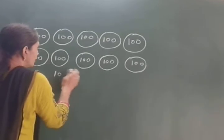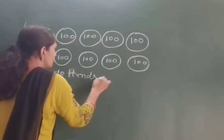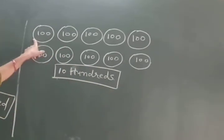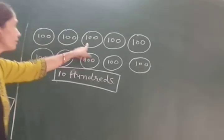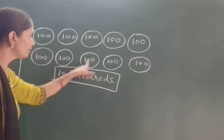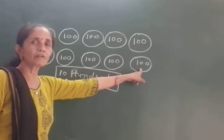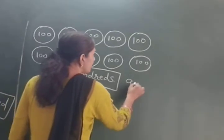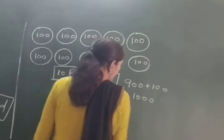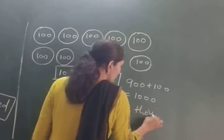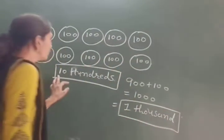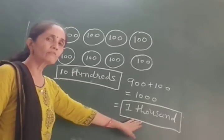This is ten hundreds. One hundred plus one hundred: one hundred, two hundred, three hundred, four hundred, five hundred, six hundred, seven hundred, eight hundred, nine hundred - which means one thousand. This is one thousand. So ten hundreds equals one thousand.